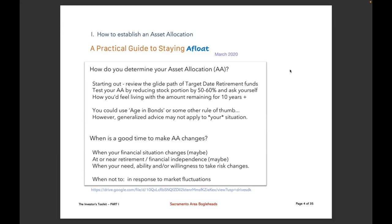Say you choose a target date 10 years from now but your actual retirement date is 15 or 5 years out. What I recommend here is to test your asset allocation after you determine what's in the target date fund by reducing your stock portion by about half, and ask yourself how you feel about living with the amount that remains for more than 10 years. This is an exercise on paper — not suggesting you actually make any moves. There are rules of thumb like age-in-bonds, but generalized advice probably doesn't apply to most people.